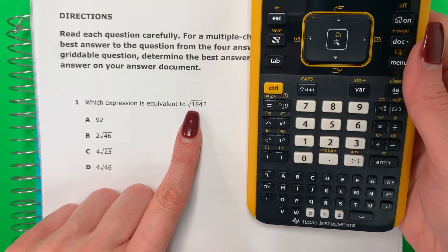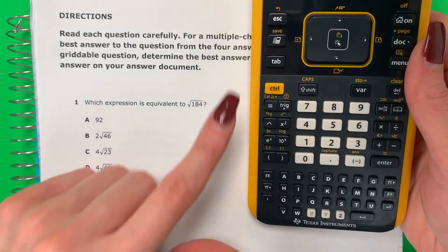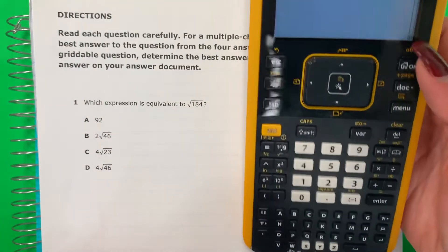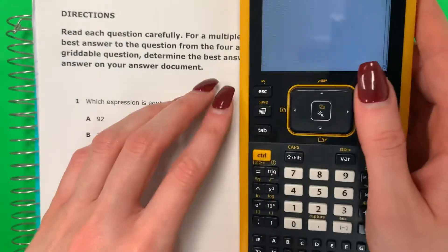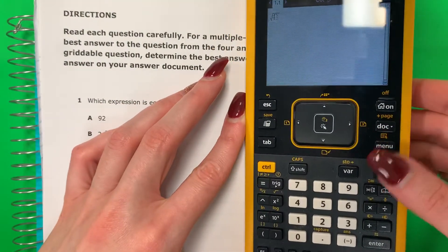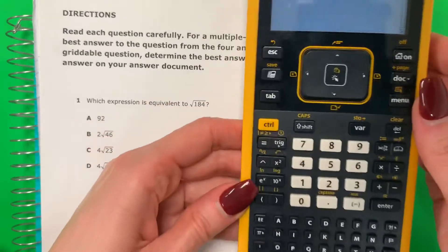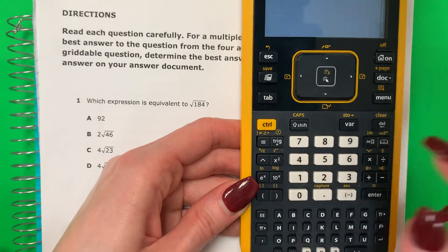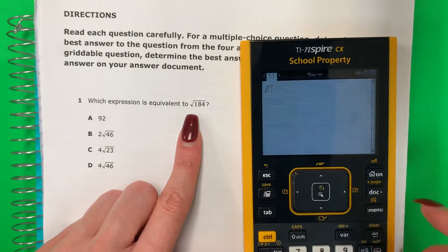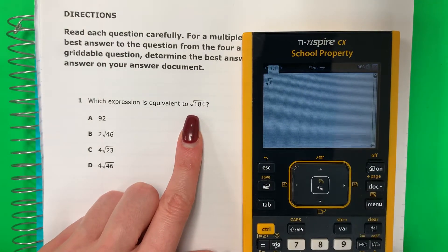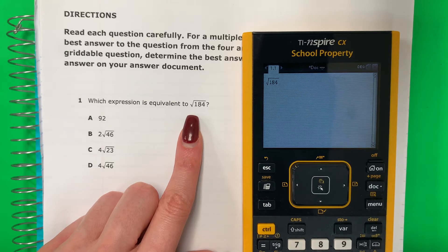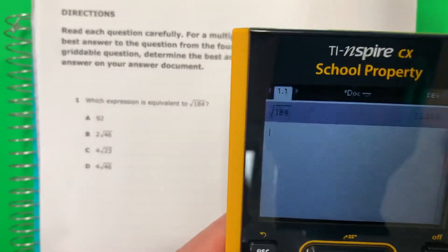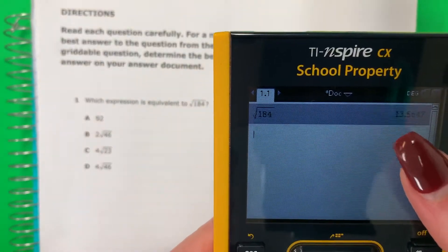To get square root, para tener el raíz cuadrado, you need to do control and then this one, este. And then you will get that. So one more time, otra vez. Let me show you. Para tenerlo, control, this one, x squared. And I have it. And I'm going to go ahead and put 184. Enter. And I get 13.5647.